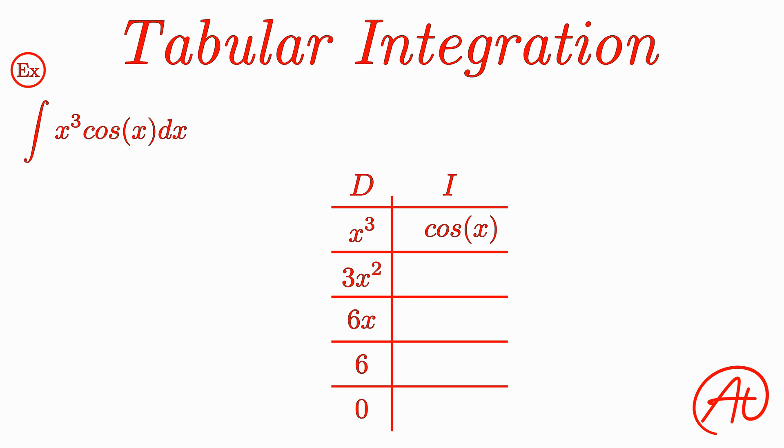In the second column, let's take the integral again and again for as many rows as we did for the derivative. First, the anti-derivative of cosine of x is sine of x, followed by negative cosine of x, negative sine of x, and finally once again cosine of x.